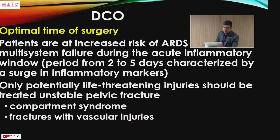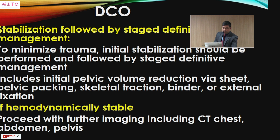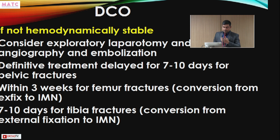Patients at increased risk of ARDS and multi-system failure during the acute inflammatory window are identified by elevated inflammatory markers. In DCO, only life-threatening and limb-threatening injuries are treated: compartment syndrome, fractures with vascular injury, reduced dislocations, traumatic amputations, unstable spine fractures with neurological risk, and open fractures. When the patient is unstable, DCO is the plan; Early Total Care applies to stable patients.